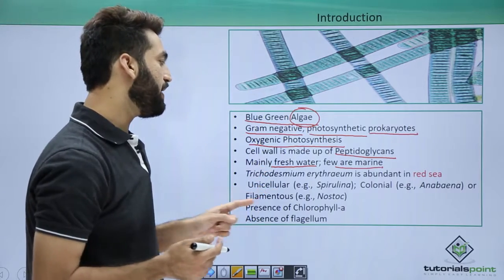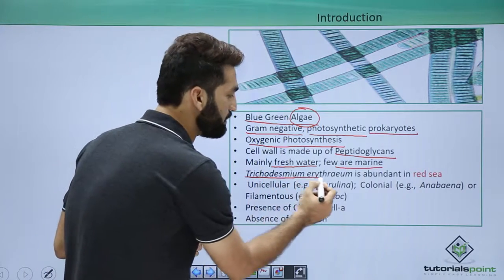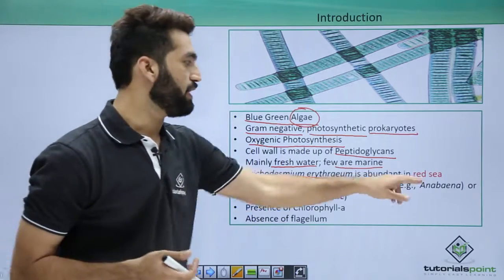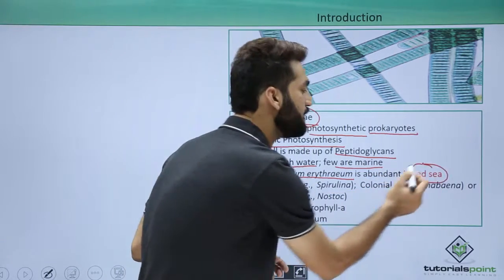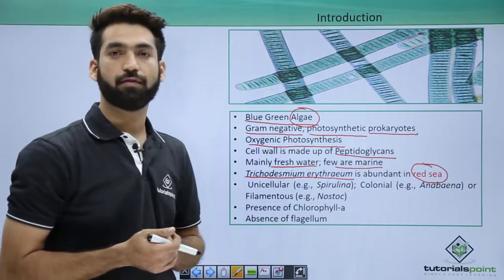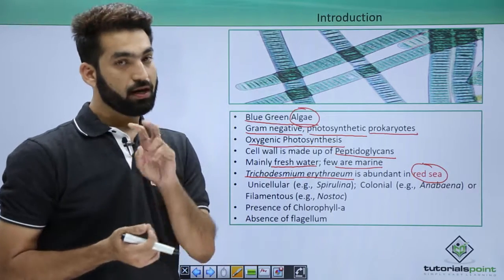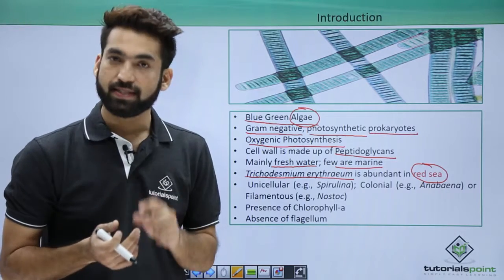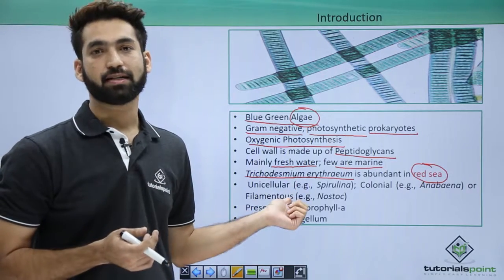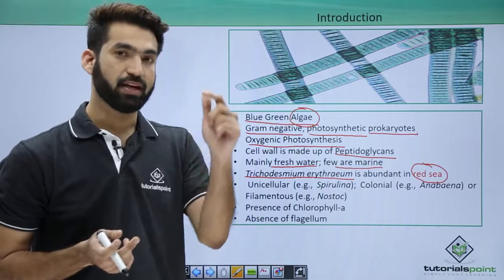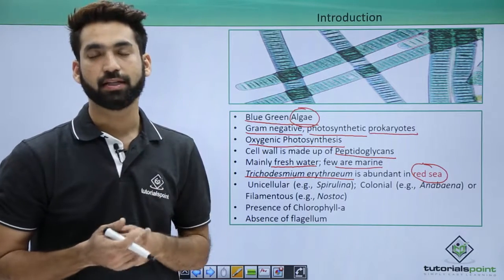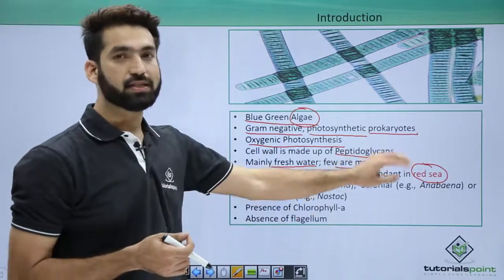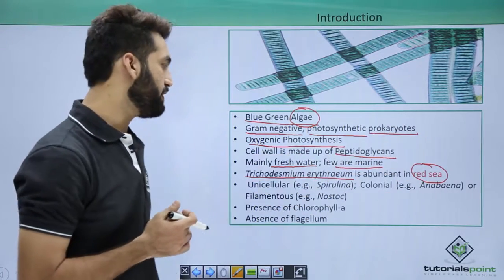One very important cyanobacterium is Trichodesmium erythraeum. It is the main cause of the color of the Red Sea — the red color is due to the presence of large amounts of Trichodesmium erythraeum. Remember: red sea is caused by a cyanobacterium, while red tide is caused by a protista member, which will be detailed later.